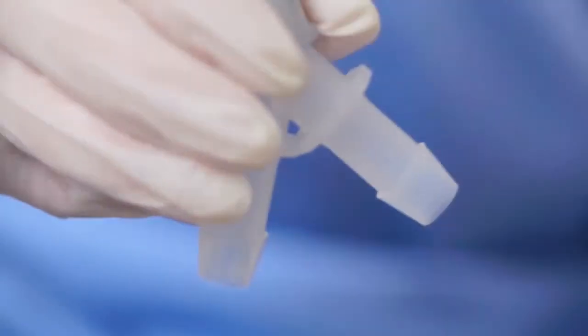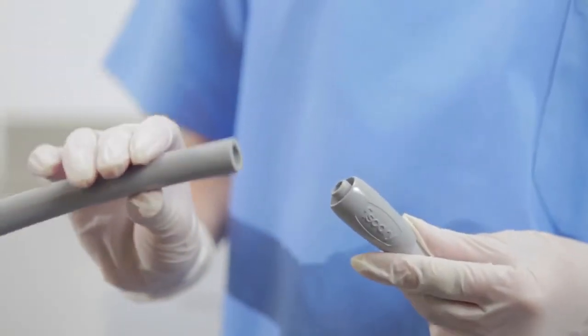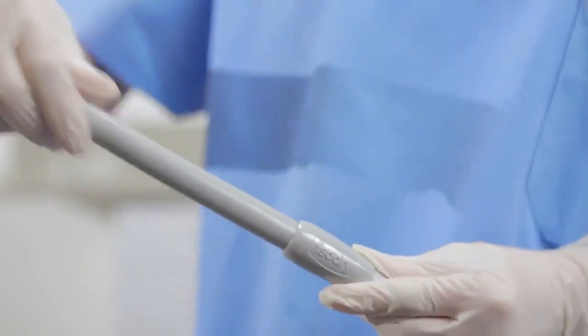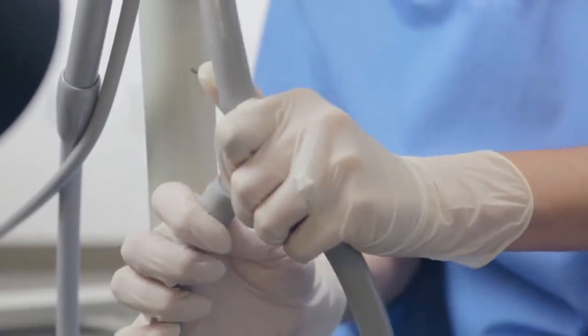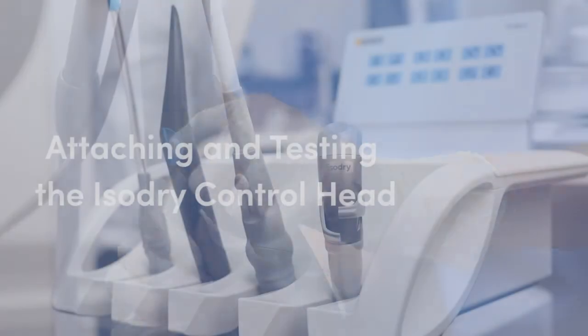Connect your existing vacuum hose onto one side of the Y-Adapter. Connect the ISO-Dry hose connector onto the vacuum hose. Connect the vacuum hose onto the other side of the Y-Adapter.